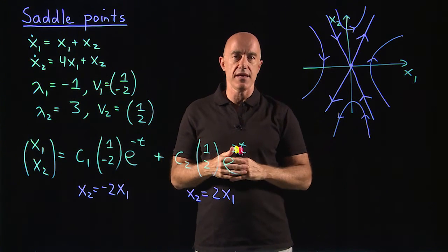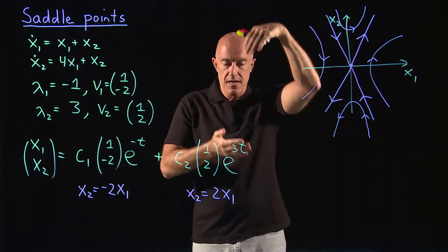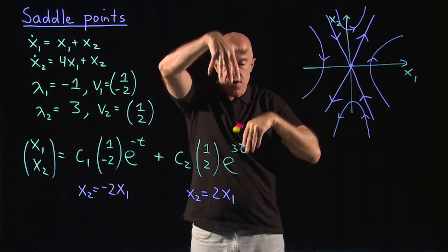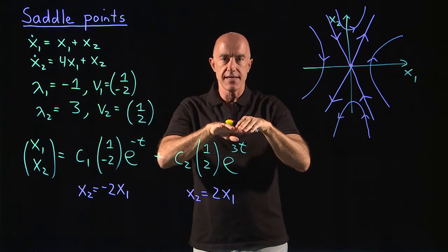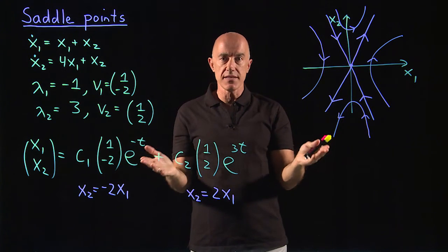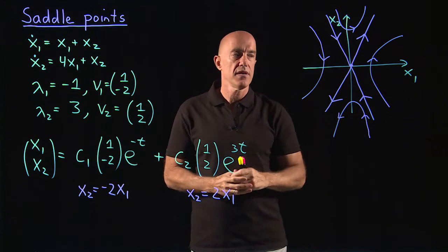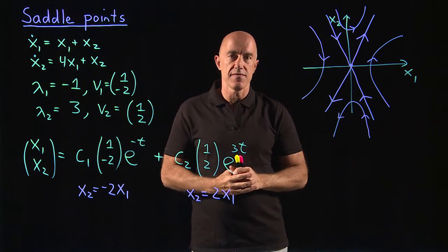So if you consider an equilibrium as a bottom, then it's a bottom on the front and the back, but then it's a top. A bottom would be a stable equilibrium. A top would be an unstable equilibrium. So it's a top going from right to left. That's why this got the name of a saddle point.